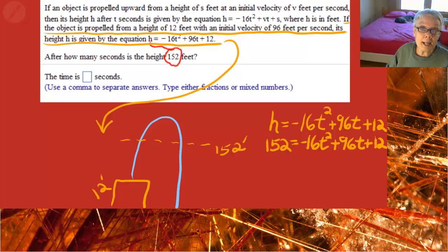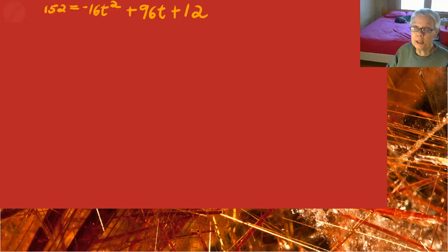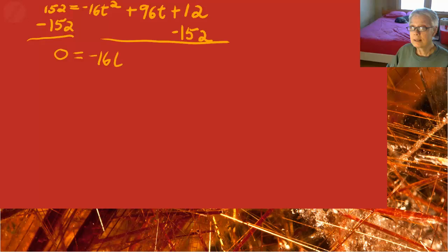Now, subtract 152 from both sides of the equation because this is a quadratic equation. We have to use the zero principle. That will give us zero equals negative 16t square plus 96t minus 140.